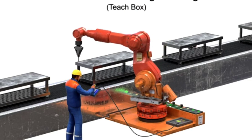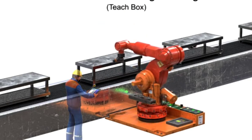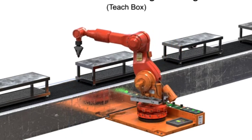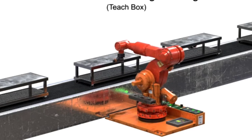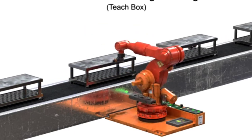Once the technician has recorded and tested the program, the teach pendant is disconnected and the robot can operate the stored program at full speed. Teach pendant programming is often associated with controlled path and point-to-point control.